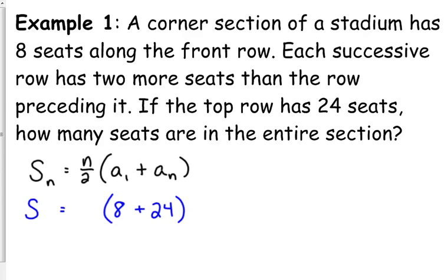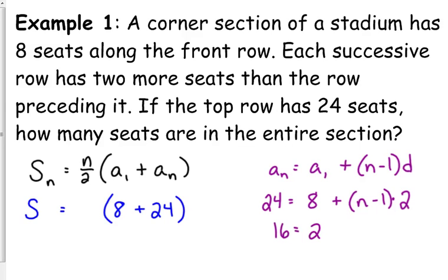We can figure that out. Let's go to our explicit formula. a sub n is equal to a sub 1 plus n minus 1 times d, because we know enough information for this. a sub n we know is 24, that's our last row. We know our first row, a sub 1 is 8. We don't know what n is. We know what d is. What's d? 2. We're adding two seats to every row. Then we can solve this. We've got 16 is equal to 2n minus 2. So 18 is equal to 2n. 9 is our n.